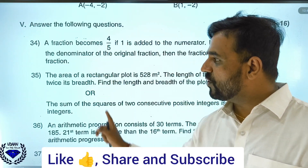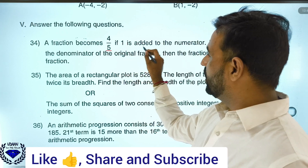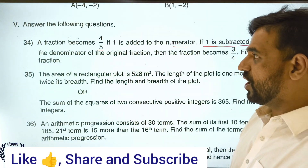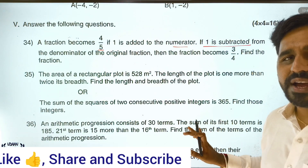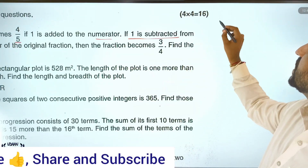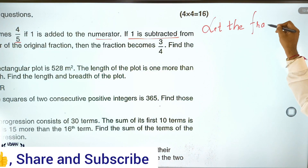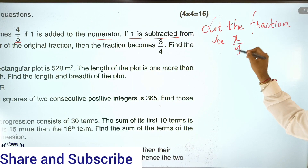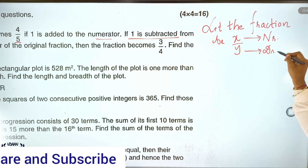From question 34, all the questions will be solved. A fraction becomes 4 by 5 if 1 is added to the numerator. If 1 is subtracted from the denominator of the original fraction, the fraction becomes 3 by 4. Find the fraction. Let the fraction be x by y, where x is the numerator and y is the denominator.